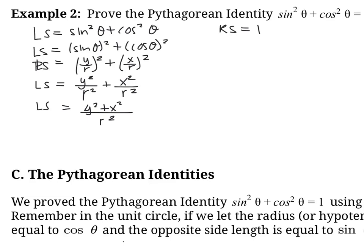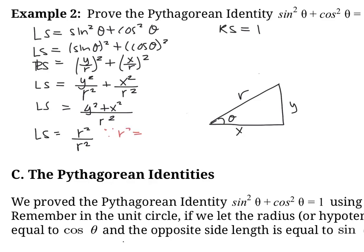Continuing to simplify, we combine the fractions to get (y² + x²) / r². We know from the Pythagorean theorem that x² + y² = r², so we can substitute r² into the numerator. Our left side becomes r²/r², which equals 1. Our right side is also equal to 1. We've simplified both sides and shown they're equal to each other. Therefore, our left side is equal to our right side, and we've proven the Pythagorean identity.